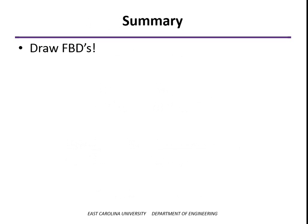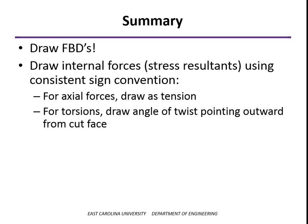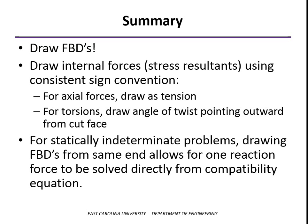To summarize: free body diagrams may seem trivial for these problems, but when students don't draw them there's a very good chance they'll get the axial forces incorrect, and sign errors are a big part of that. When you draw internal forces on your free body diagrams, use a consistent sign convention — for axial forces, draw them as though they're in tension, showing the force pulling away from the cut face. For torsion, draw the axis of twist pointing outward from the cut face. For statically indeterminate problems, start free body diagrams from the same end for each segment, and you'll end up with only one unknown reaction force in the compatibility equation.